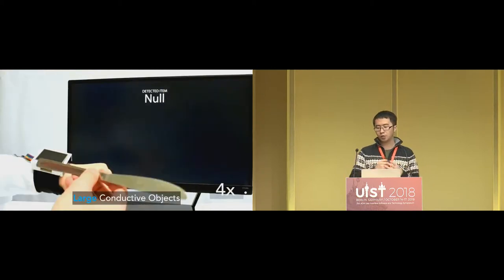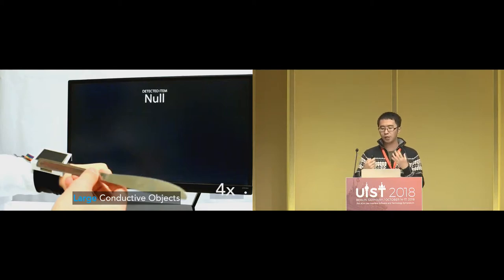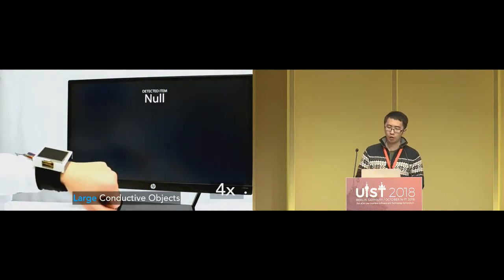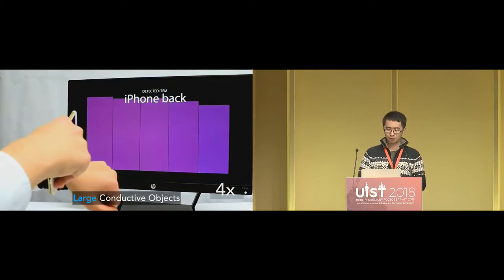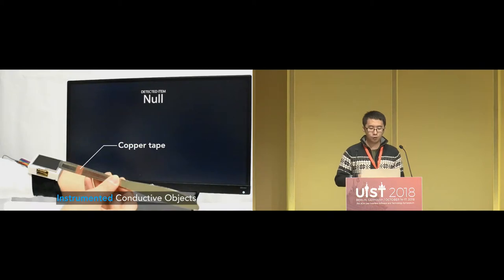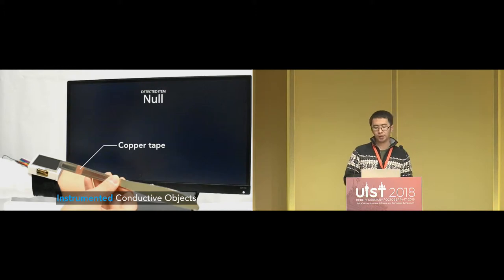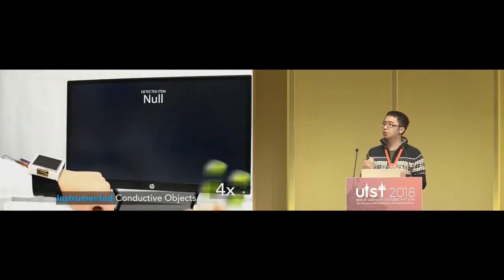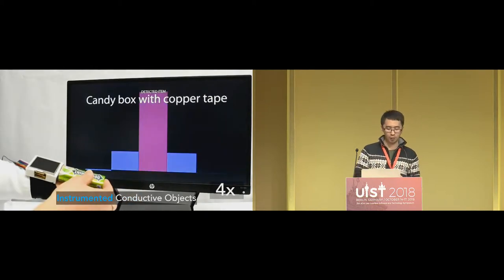The next category is large conductive objects whose contact area is larger than the sensor. Some are metallic while others are electronic devices with built-in metallic components, like a knife, scissors, metal credit card, Kindle, Nexus tablet, and iPhone front and back. For some conductive objects, we also try attaching a strip of copper tape to create a unique reference footprint, so that the same object can be used for different purposes — for example, knife with copper tape, scissors with copper tape, and a candy box with copper tape.